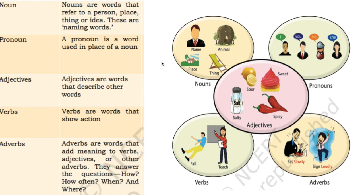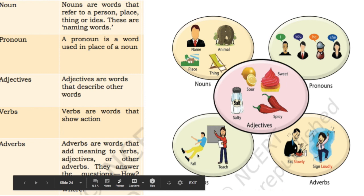Nouns include names of people, animals, places, and things. Pronouns — I, you, he, she — are used in place of nouns. Adjectives like 'sour' or 'sweet' describe nouns. For example, 'Oranges are so juicy' — juicy is an adjective describing the noun orange. Verbs show actions — run, teach, eat. Adverbs like 'eat slowly' or 'sing loudly' add meaning to verbs.